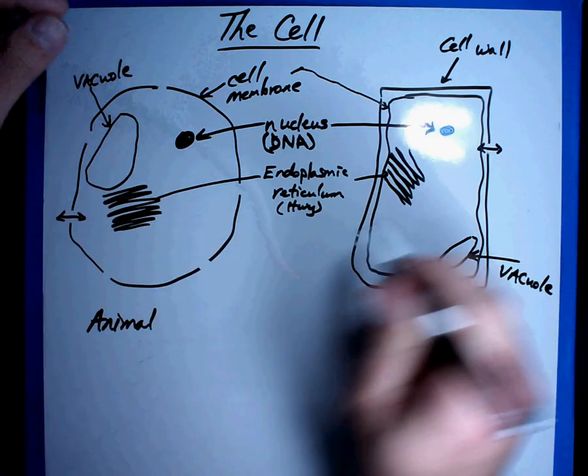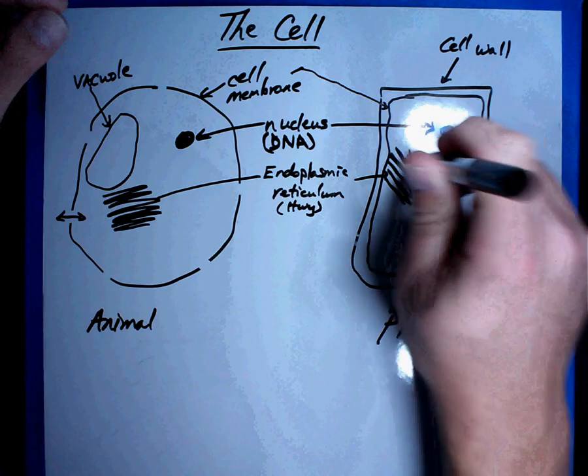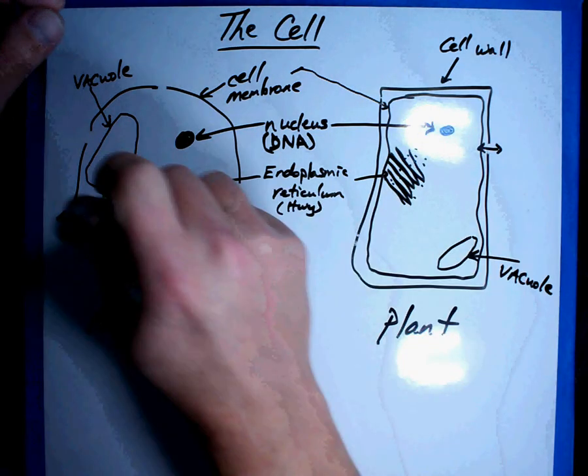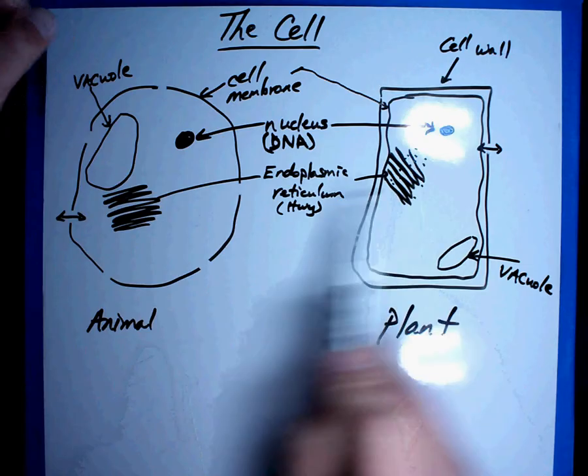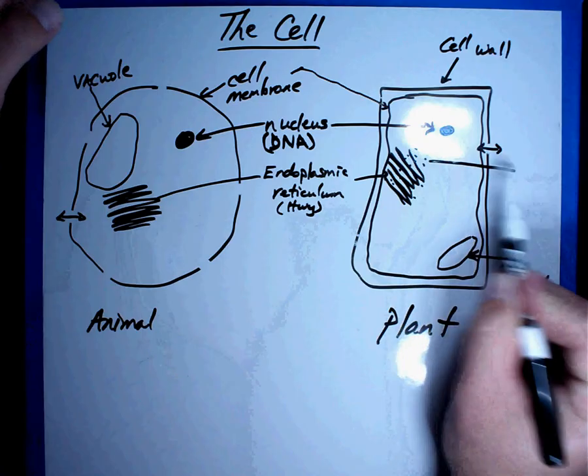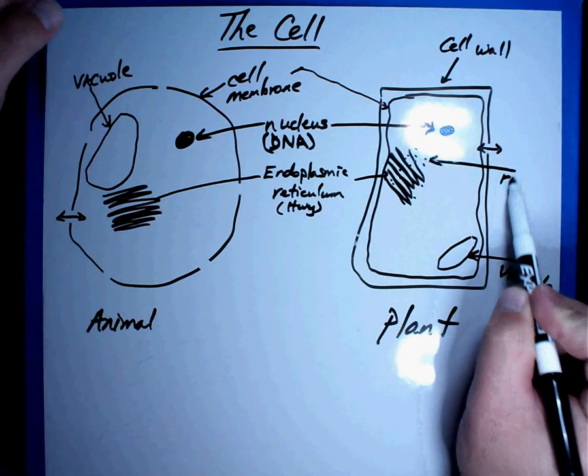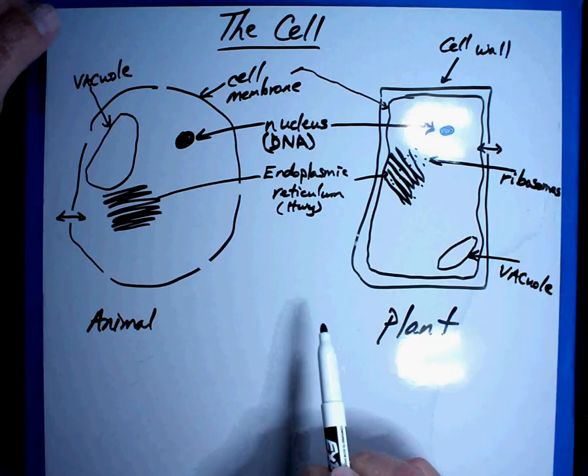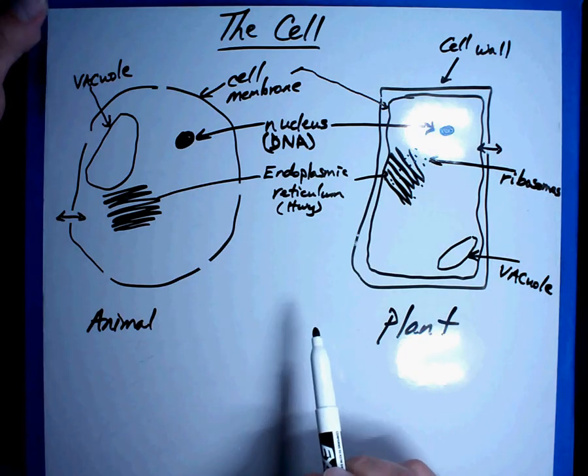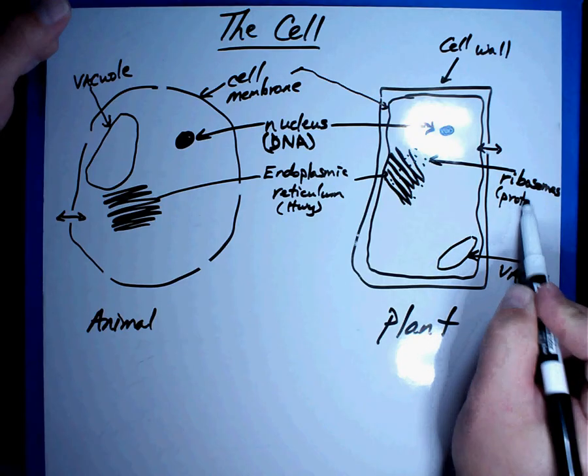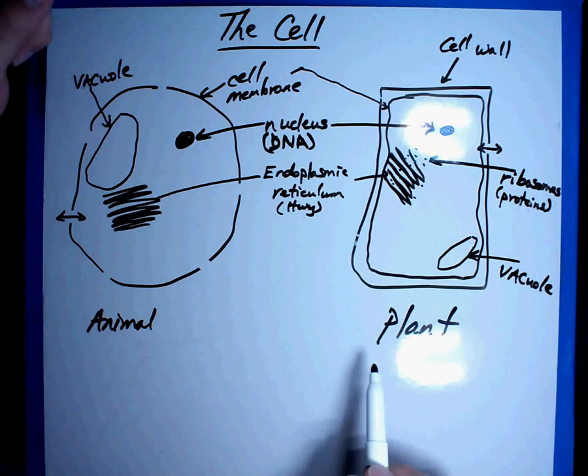Now sometimes the endoplasmic reticulum has dots all over it. And sometimes it doesn't. So I'm going to go ahead and put dots on this one, but not on this one. These little dots are what are called ribosomes. And these are really important. We'll talk about them in one of the other sessions of ribosomes, but we're going to go ahead and put the word proteins. Ribosomes are where we're going to have the proteins of the cell. And those are going to be very important.